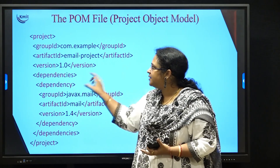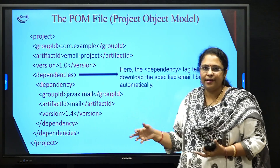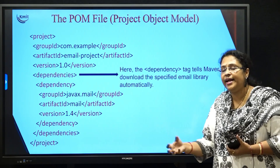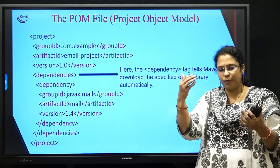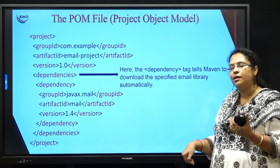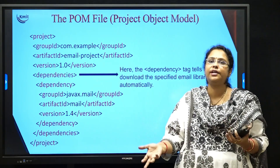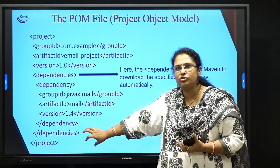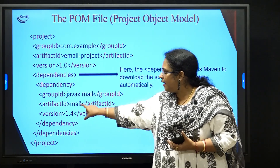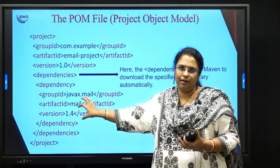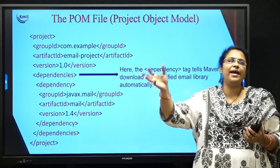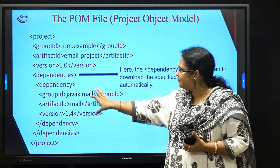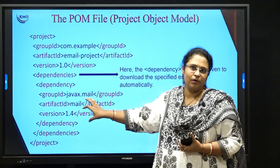Next you have the dependency tag. Dependencies are nothing but the libraries that are needed for your particular project. Your project needs n number of libraries which help the particular project to get executed. Under dependencies you have all the different information of the library — in this example there is one library called mail. You simply mention you want mail for your particular project, and your Maven build tool will search for it, download it, and attach it into this pom.xml file.